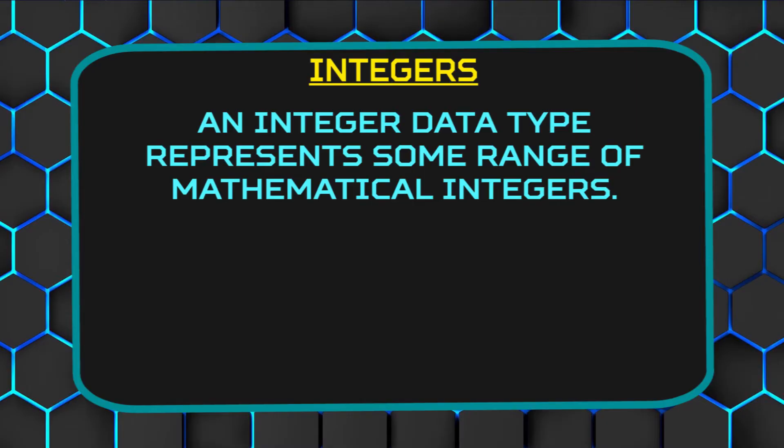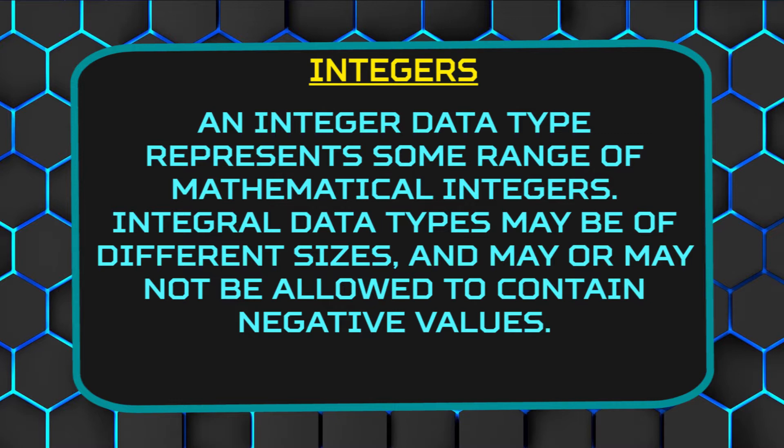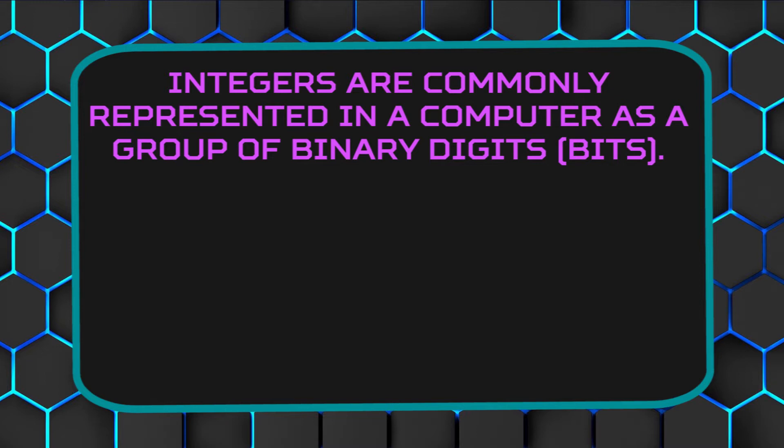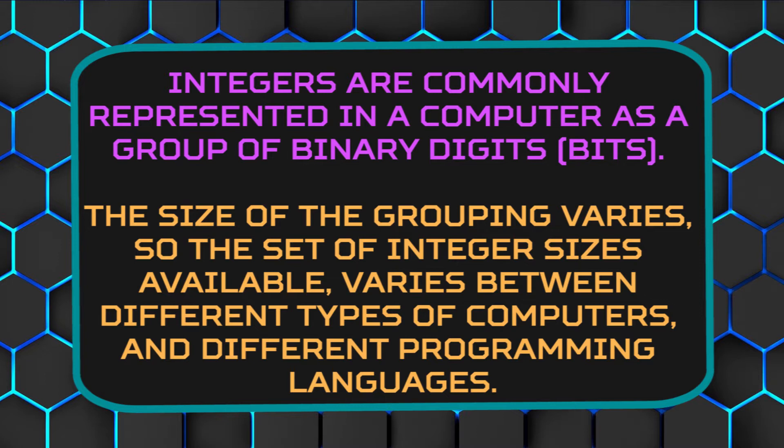Let's start off with integers. An integer data type represents some range of mathematical integers. Integral data types may be of different sizes and may or may not be allowed to contain negative values. Integers are commonly represented in a computer as a group of binary digits or bits. The size of the grouping varies, so the set of integer sizes available varies between different types of computers and different programming languages.